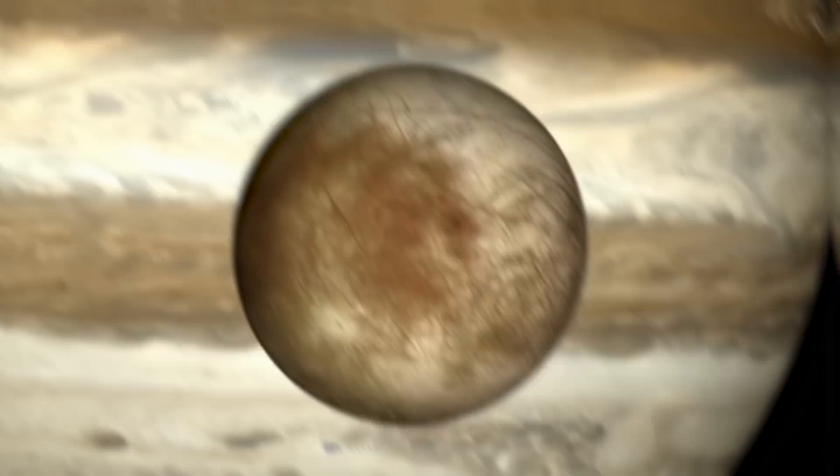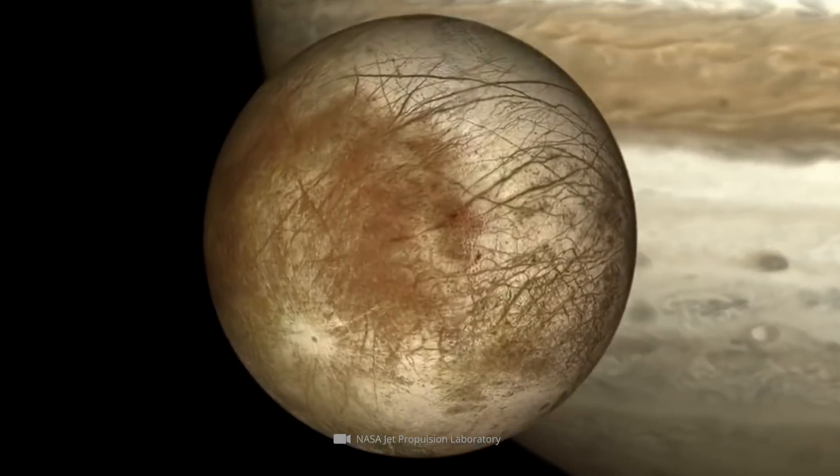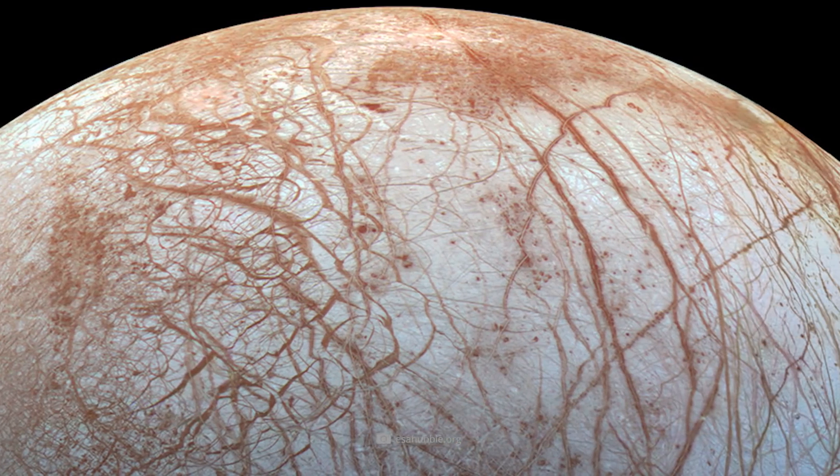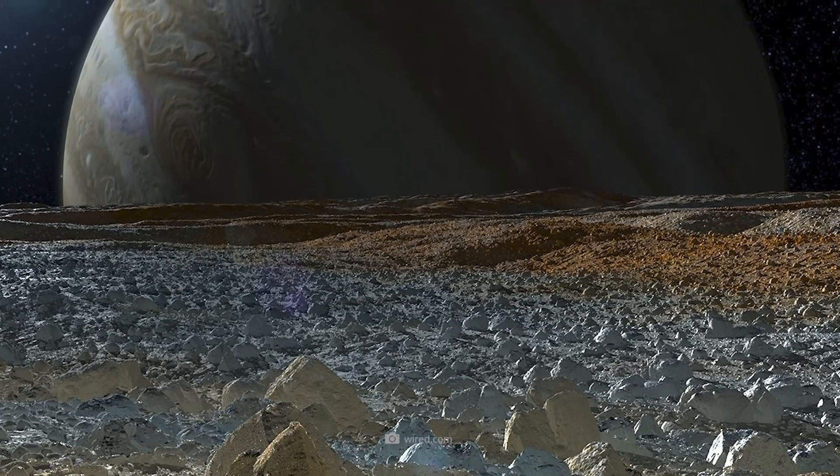The icy surface is not the only characteristic that catches our eye when we look at the satellite. On the other hand, we have the large-scale, reddish shimmering colorations on the outer surface. This is the result of deposited minerals.